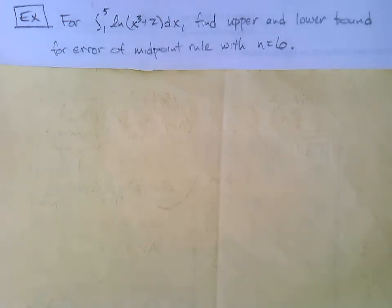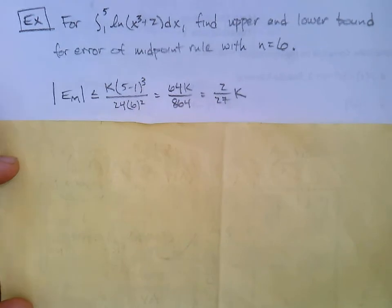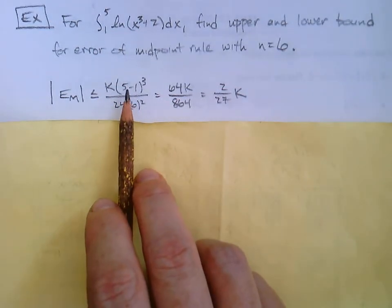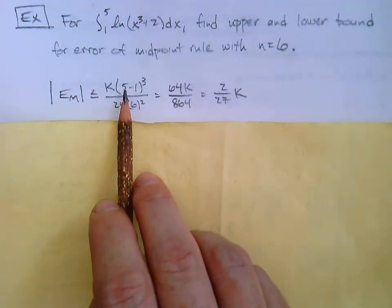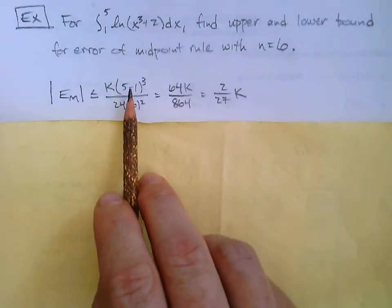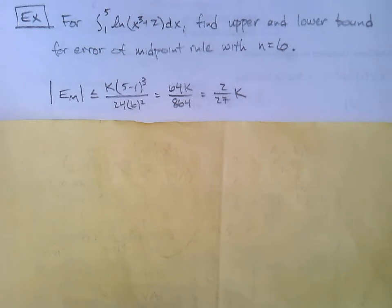We're going to find the error and then use our original answer to find the upper and lower boundaries for what that answer could be, sticking with n = 6. Starting with the easy part: the absolute value of the error of the midpoint is less than or equal to K times (5 minus 1) to the third over 24 times 6 squared. That gives 4³ = 64 in the numerator, and multiplying out gives 864 in the denominator, reducing to 2 over 27 times K.